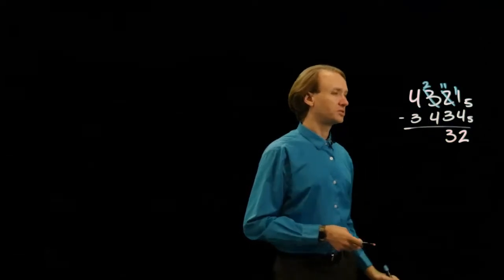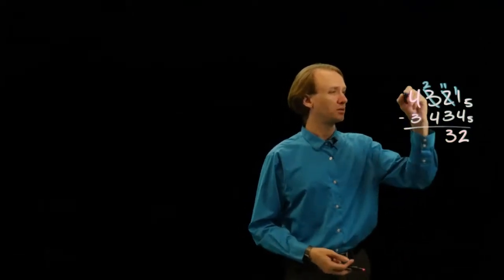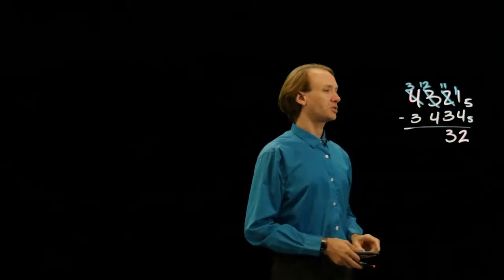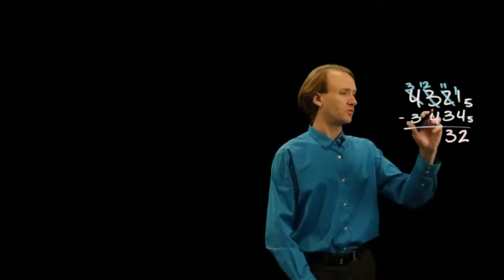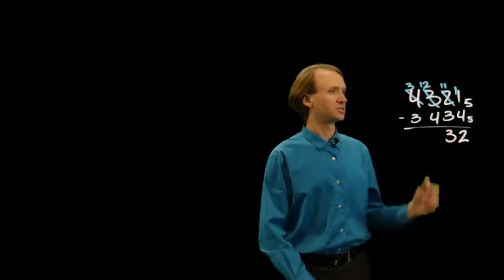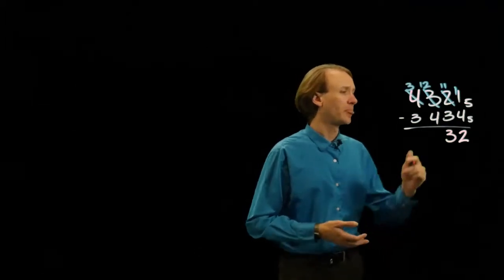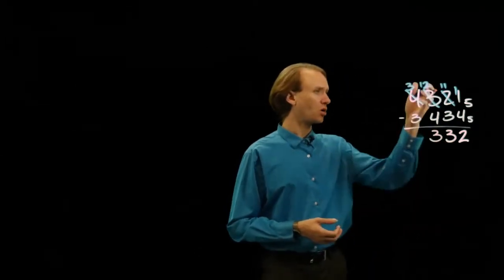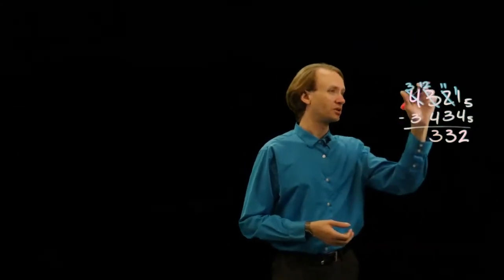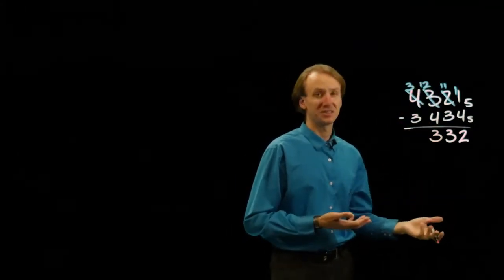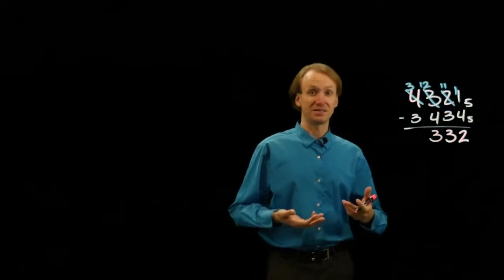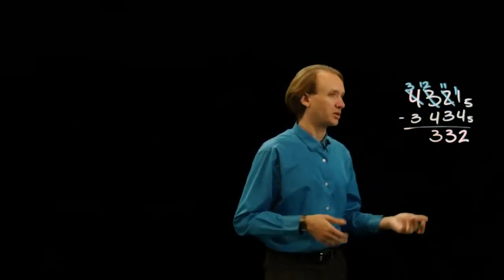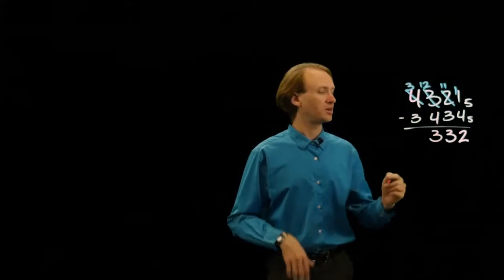Now 4 is greater than 2, so I'm going to need to borrow something. Now I've got 12 minus 4. 4 plus 1 is 5, plus 2 more gets me to 12, so I can say that's 3. Or I could say really 12 in base 5 is the same as 7 in base 10, so 7 minus 4 would be 3 there too. And then 3 minus 3 is 0.